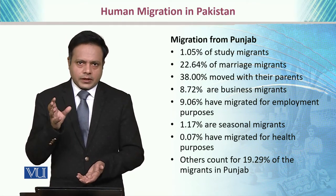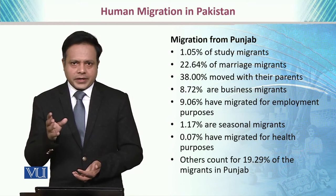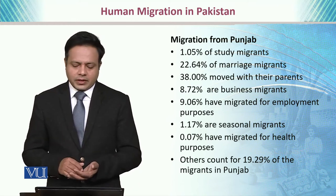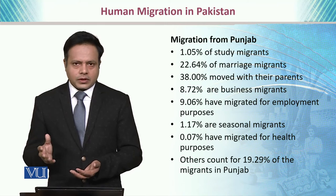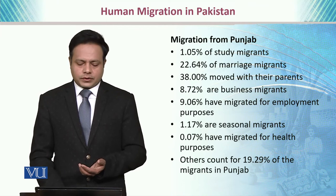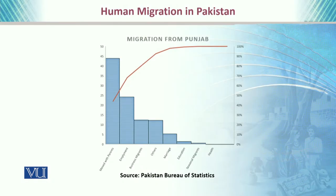Usually in rural areas they do not find adequate health facilities, so they move to urban areas. The others count around 19% of migrants who migrate for other purposes in Punjab. Here you would see the graphical reflection of the purposes of migration — the majority of people are usually moving with their parents, and then for employment, business, and other purposes.